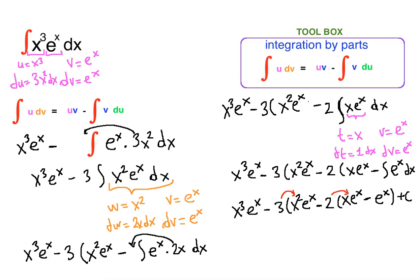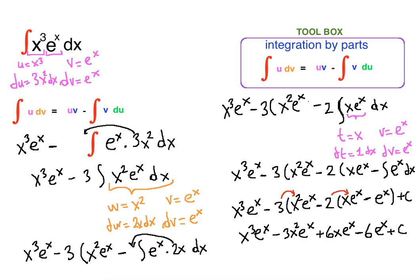Now all we have to do is distribute. So: x cubed e to the x minus 3x squared e to the x, plus 6x e to the x minus 6x e to the x — wait, negative 3 times negative 2 is positive 6 — giving us plus 6x e to the x, and then negative 6 e to the x plus C. This is the final answer. Let's box it.